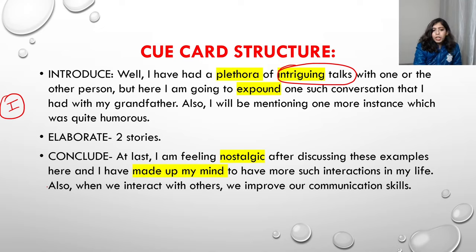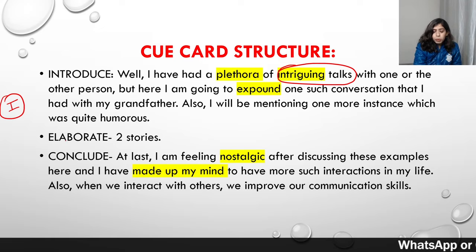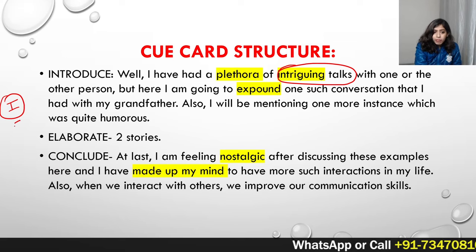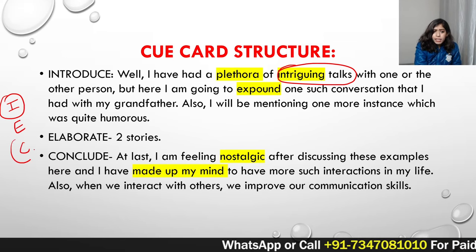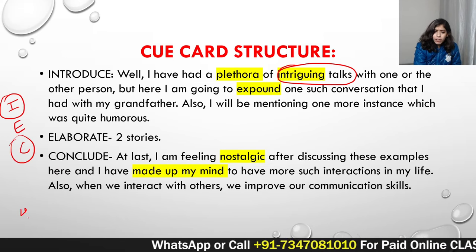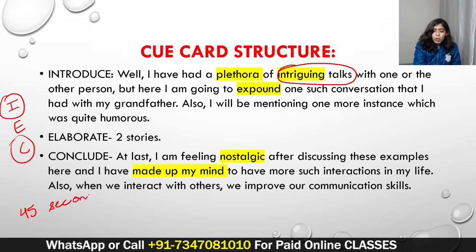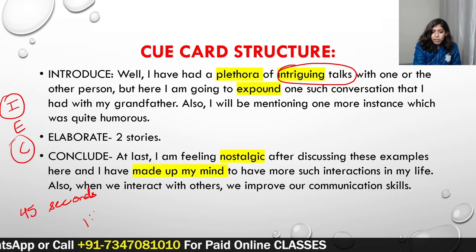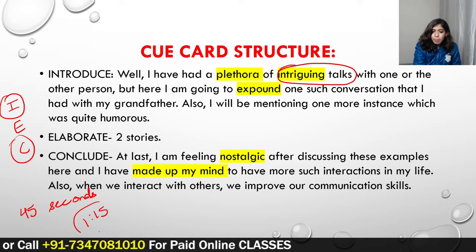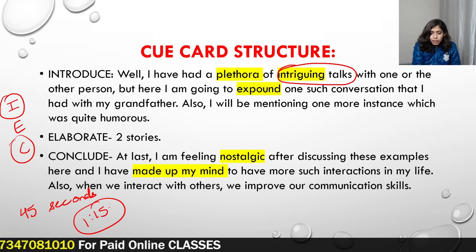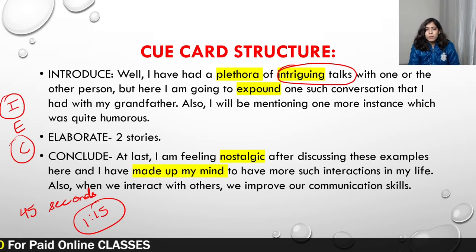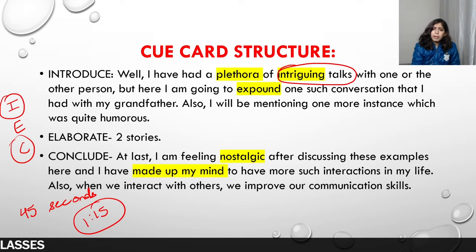Moreover, this introduction and conclusion from the IEC method easily takes up 30 to 45 seconds on its own. So you only need to speak for about 1 minute 15 seconds — I have already given you the content. You've told both stories, added examples — now just elaborate and then conclude.